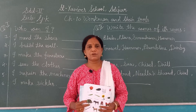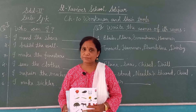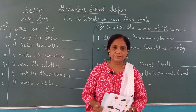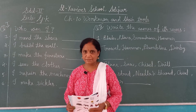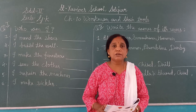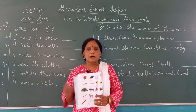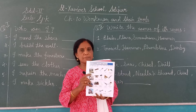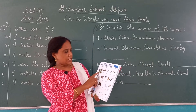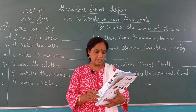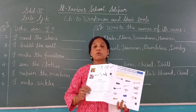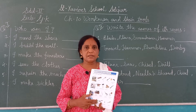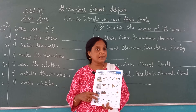Hello students, how are you? I hope you all will be fine and doing your studies regularly. Before starting our class, let us revise what we have studied. So chapter number 10 — the name of the chapter was 'Workmen and Their Tools.' We covered the tools they use: Carpenter, Blacksmith, Tailor, Mason, Mechanic, and Cobbler. In the last video we read, explained, and listened to this chapter.